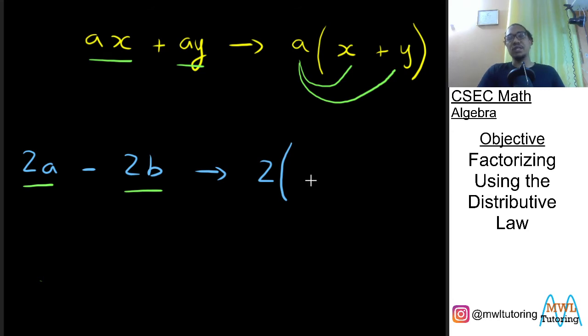And now we need to fill the brackets. And to do that we ask ourselves the next important question. What do I need to put inside of these brackets so that when I expand this bracket I get back what I started off with. Now if I want to get back 2a then I need to just multiply this 2 simply by a.